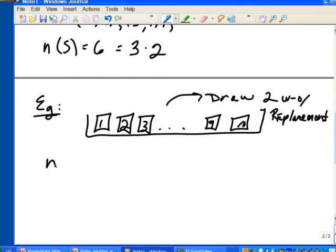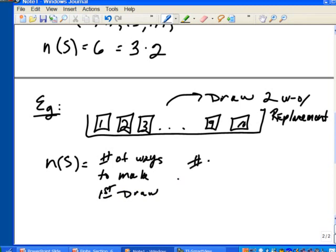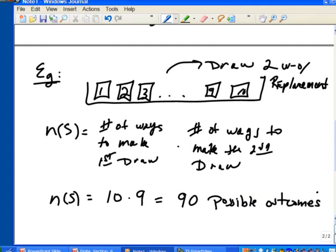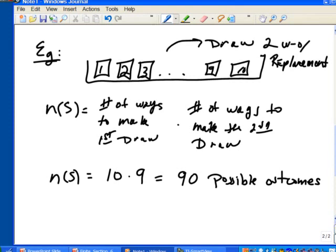The size of the sample space would be the number of ways to make the first draw, and then by the multiplication principle, we would multiply that by the number of ways to make the second draw. There's 10 tickets in the box, so the number of ways we can make the first draw would be 10. Now we've drawn 1 out and we're not replacing it. How many tickets are left in the box? That would be 9. So the size of the sample space is 90 possible outcomes.